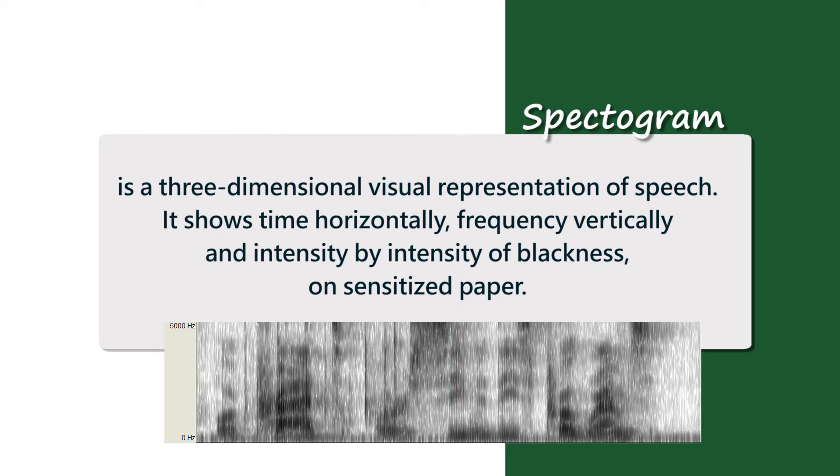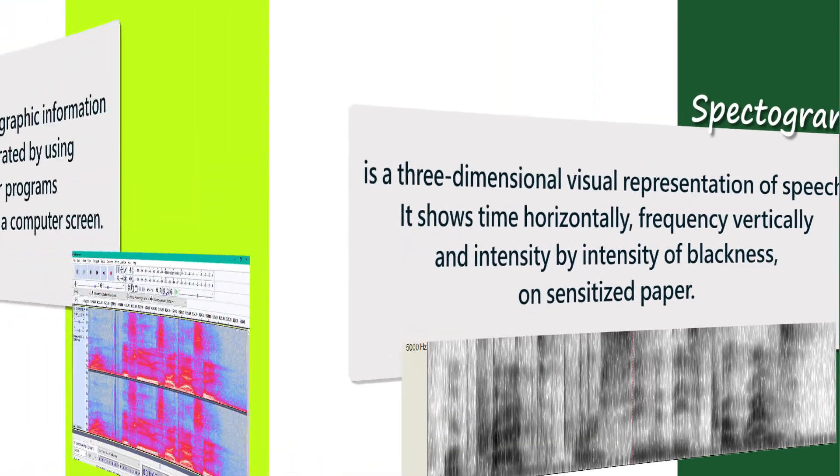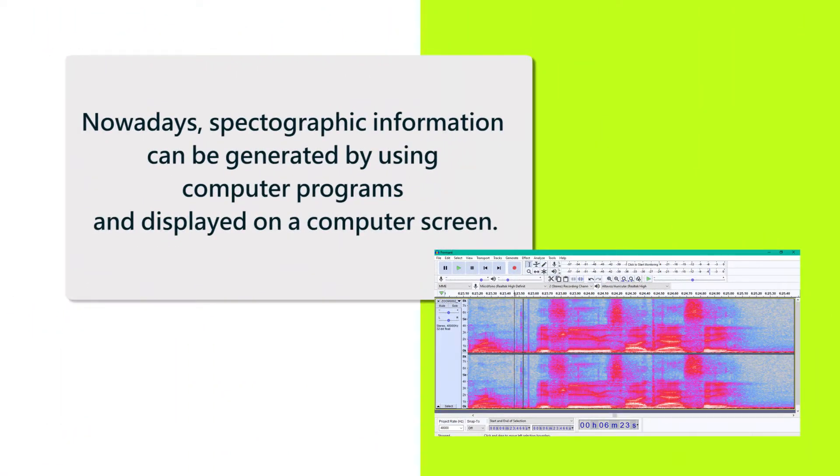It shows time horizontally, frequency vertically, and intensity by the blackness on sensitized paper. This is the classic spectrogram. Nowadays, however, spectrographic information can be generated using computer programs and displayed on a screen.